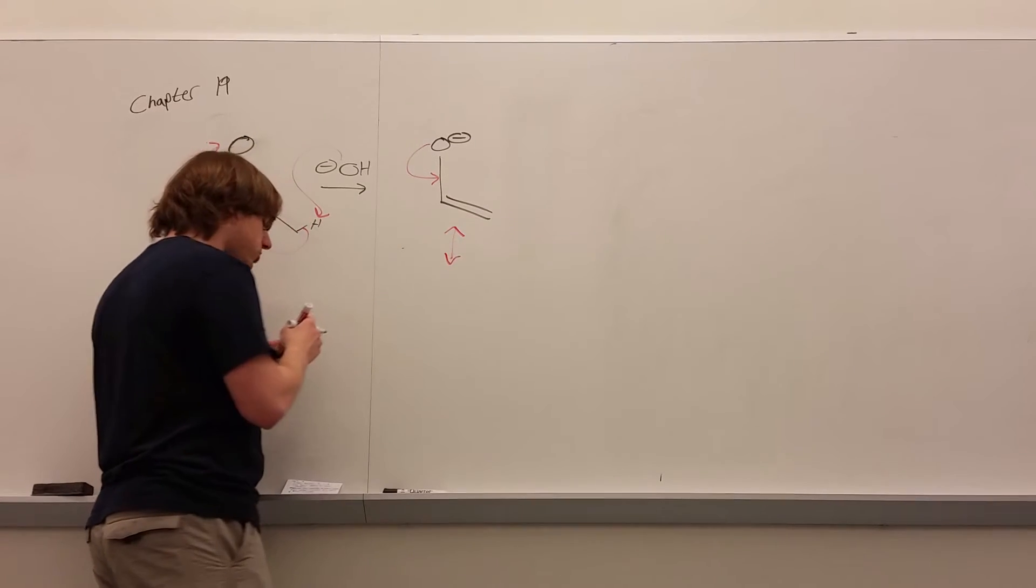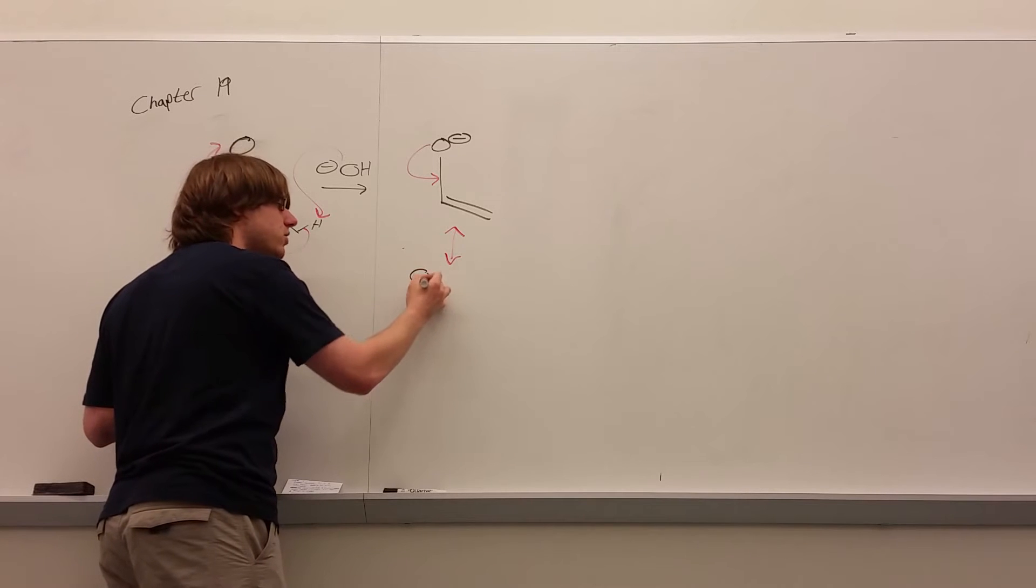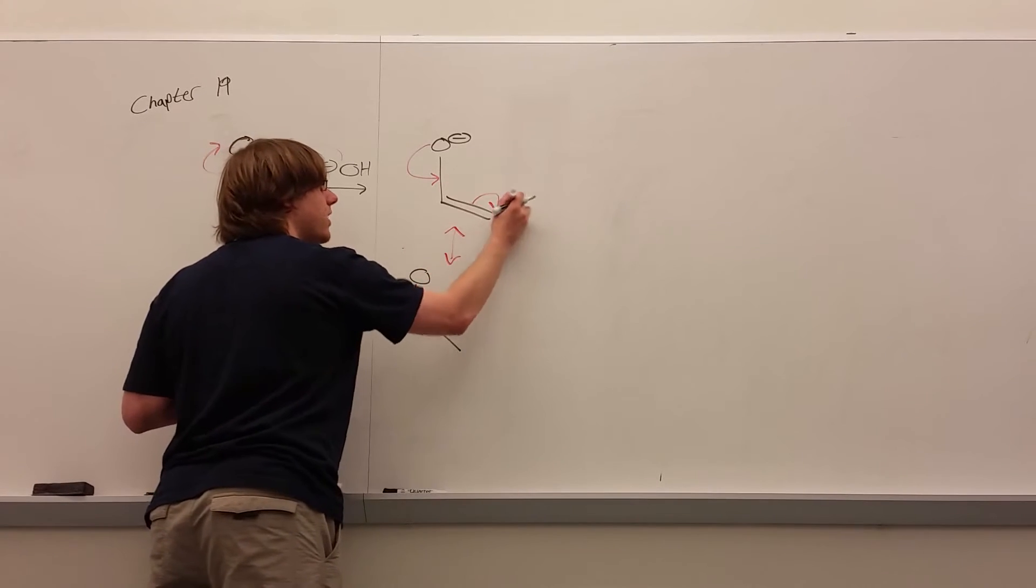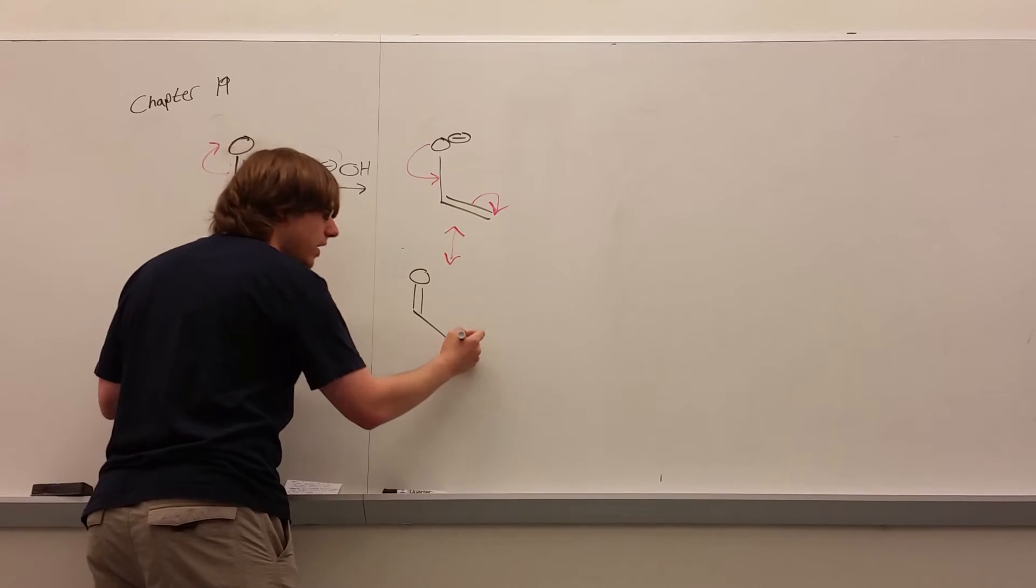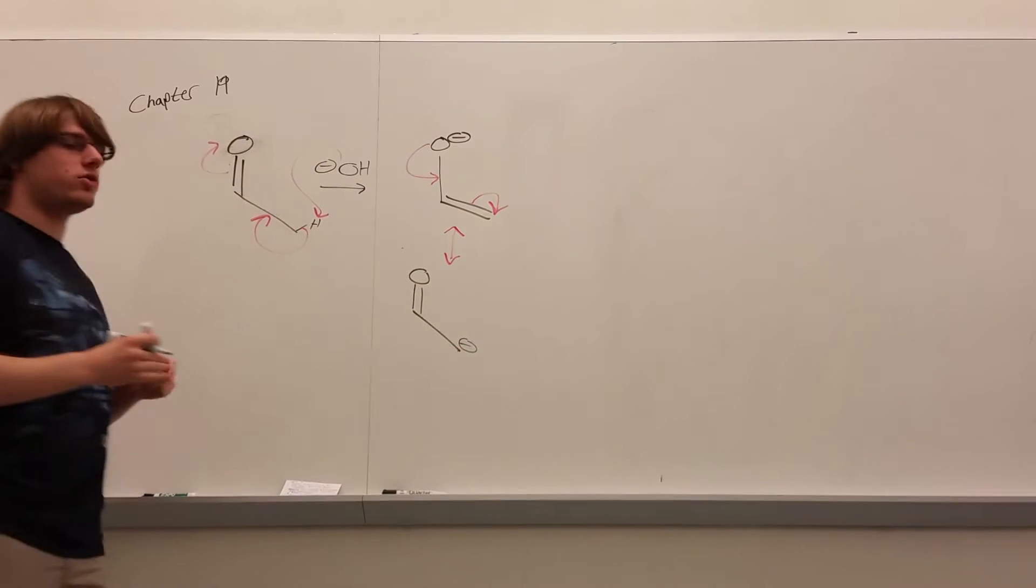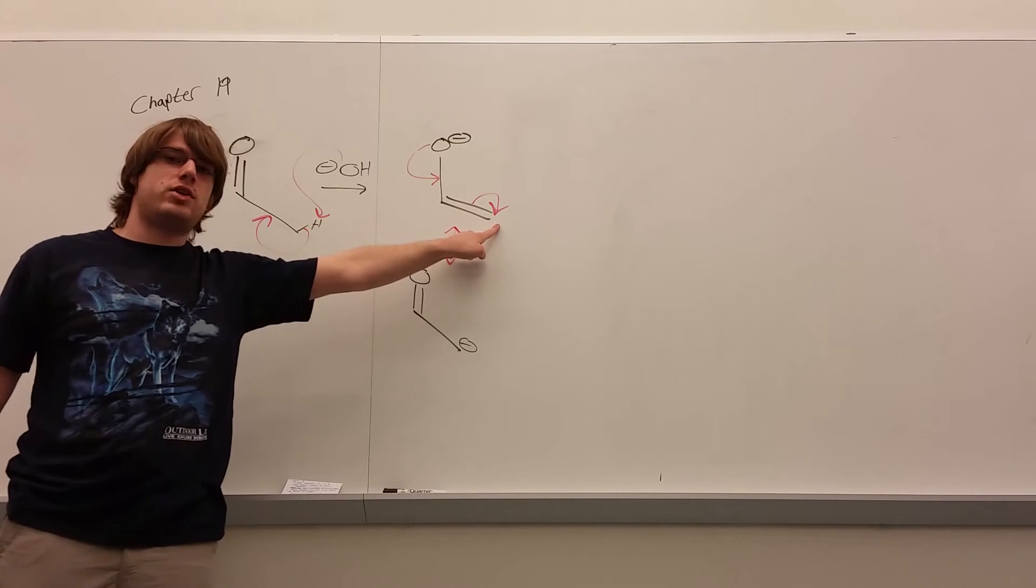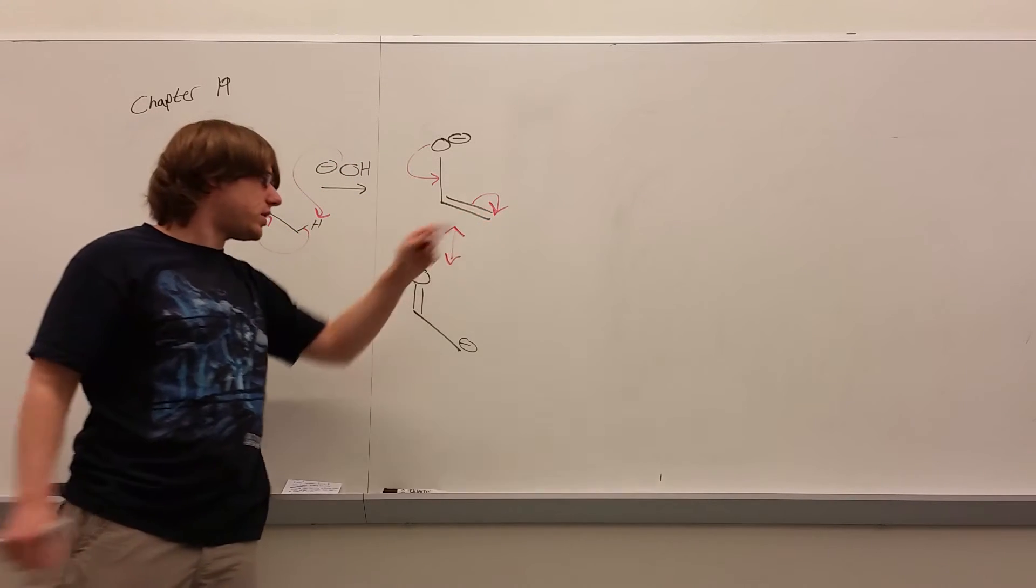And remember, there's a resonance structure that can help you double-check which carbon things you get connected to, because if I do that arrow and then move this down like that, I would have the negative charge on this carbon over here. So whenever you have an enolate, the oxygen never does the attack, and the carbon at the end of the double-bond is the one that always does the attack.